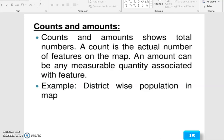Counts and amounts. Counts and amounts show total numbers. A count is the actual number of features on the map. An amount can be any measurable quantity associated with a feature. The example is district-wise population in a map.